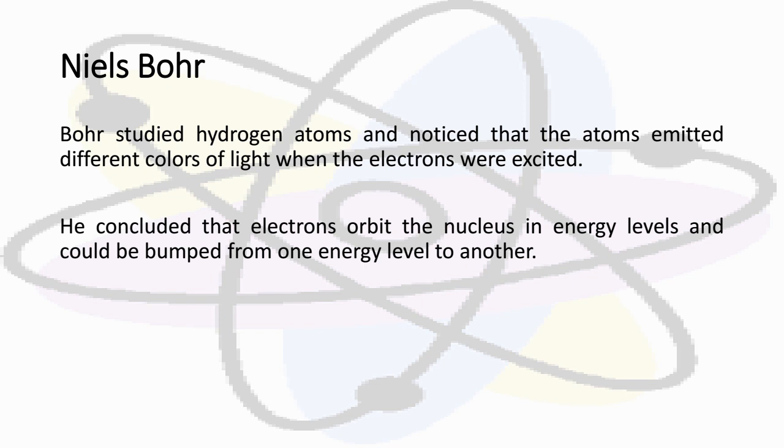A little while later, Niels Bohr. Now he's a Danish chemist. He studied hydrogen atoms and noticed that the atoms emitted different colors of light when the electrons were excited. He concluded that electrons orbit the nucleus in energy levels and could be bumped from one energy level to another.